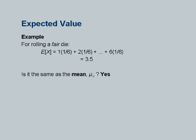Is the expected value the same as the mean of the random variable? If you look at this example, you have the six numbers 1 to 6, all equally likely, so 3.5 is nothing but the mean. Also, from the definition as the weighted average of all the numbers, you can say this is the mean of the random variable. So we have a new name for mean, which we now call the expected value when talking about random variables.